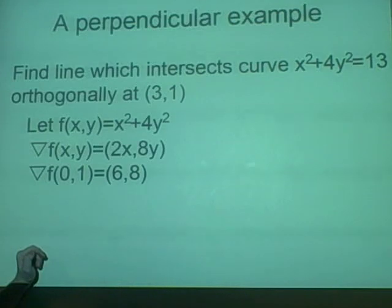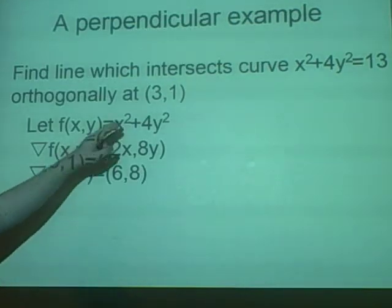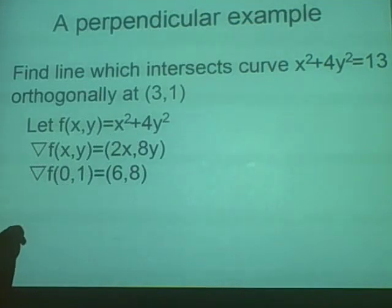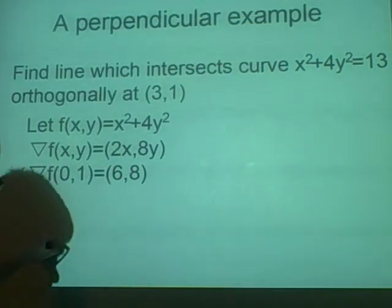Now what we know so far is we want to find a function where it goes through the point (3,1) and is orthogonal to (6,8).